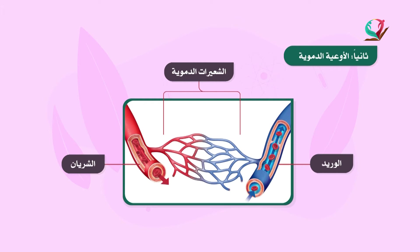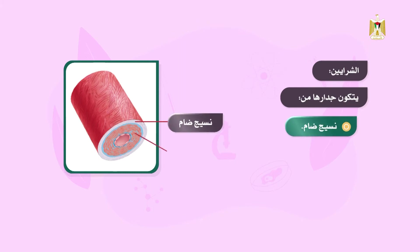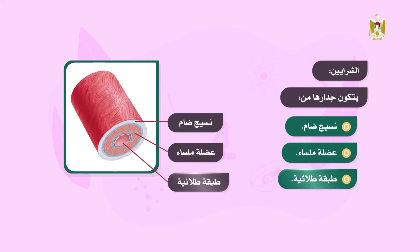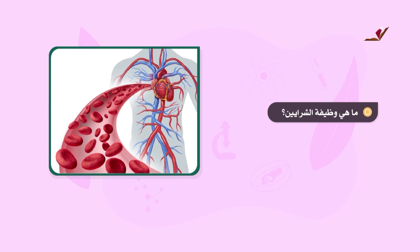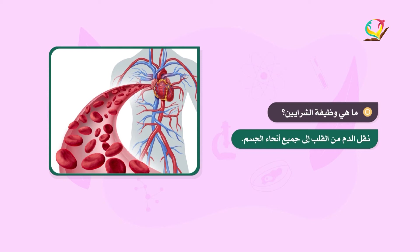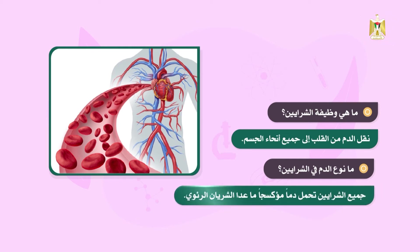الشرايين: يتكون جدارها من ثلاث طبقات من الأنسجة هي نسيج ضام وعضلة ملساء وطبقة طلائية. وظيفتها نقل الدم من القلب إلى جميع أنحاء الجسم أي بعيداً عن القلب. جميع الشرايين تحمل دماً مؤكسجاً أي غنياً بالأكسجين، ما عدا الشريان الرئوي.